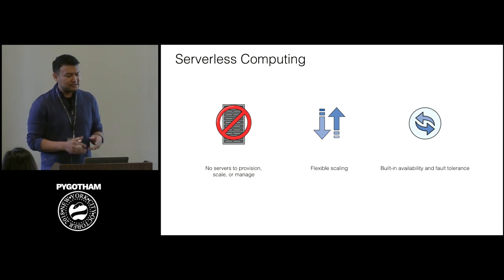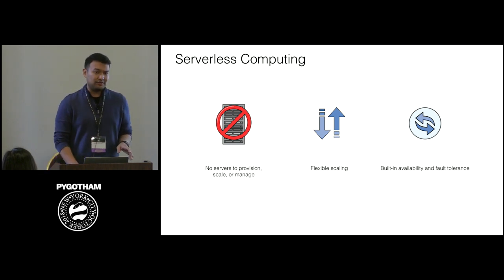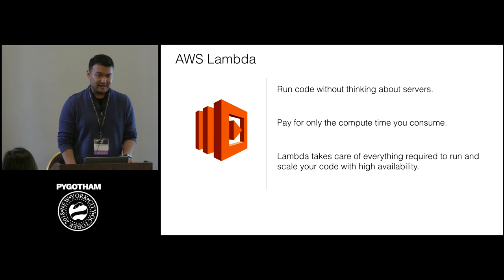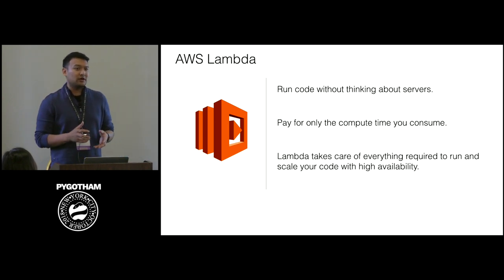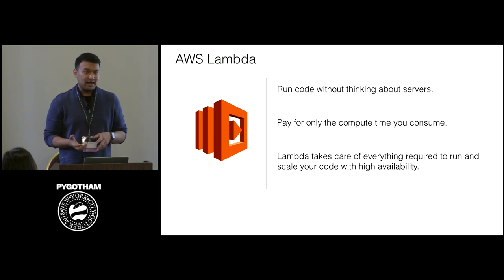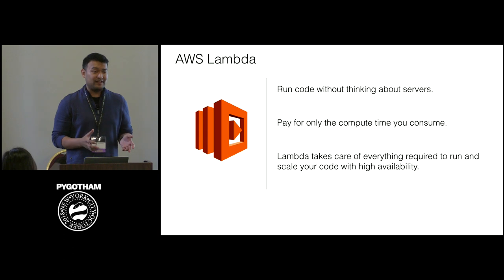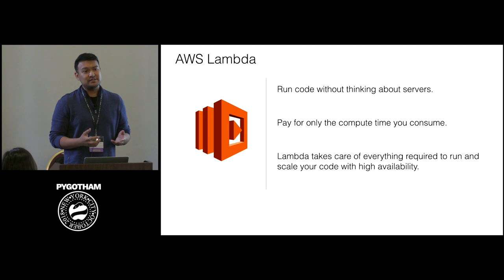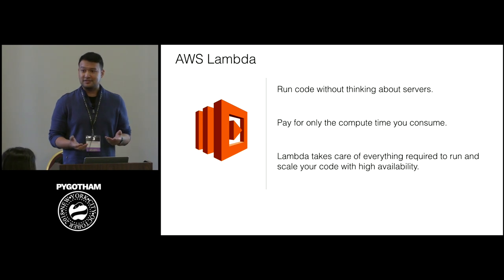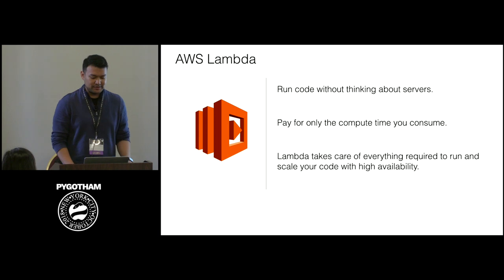The main service underpinning a lot of what we'll talk about today is AWS Lambda. You take the code you want Lambda to run, give it to Lambda, and configure it to run based on certain events. One of the great things about Lambda is that you only pay for the compute time your function is actually running — billed to the nearest hundred milliseconds.